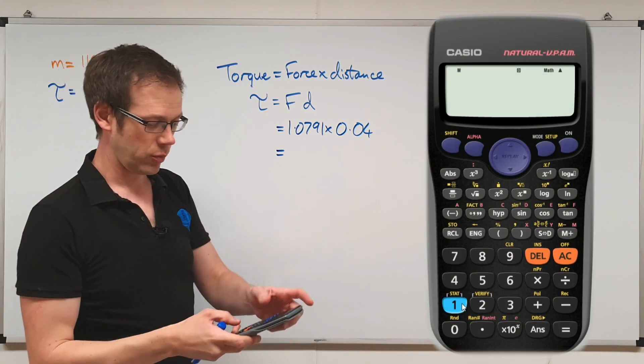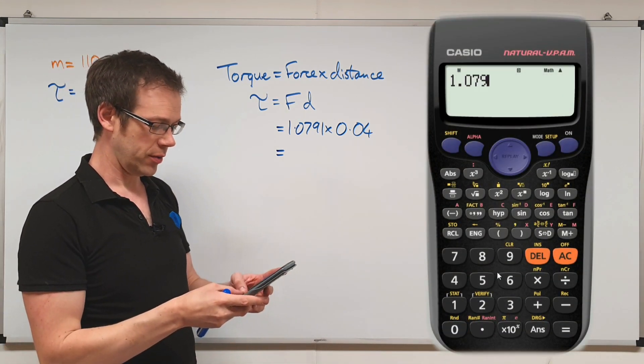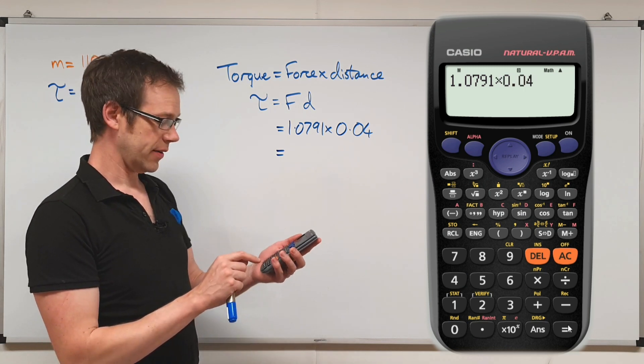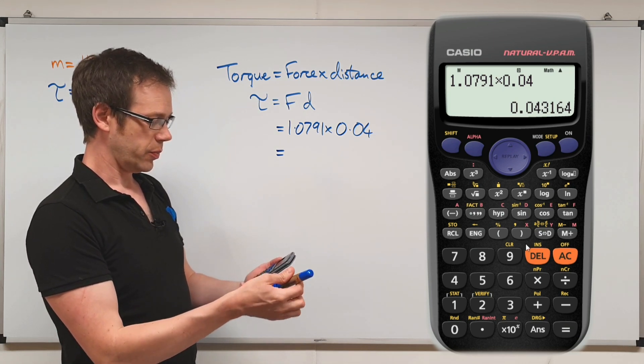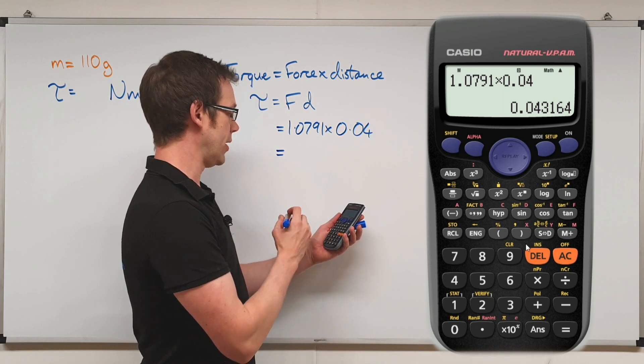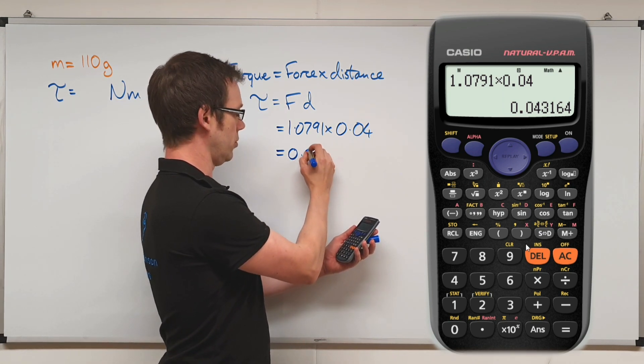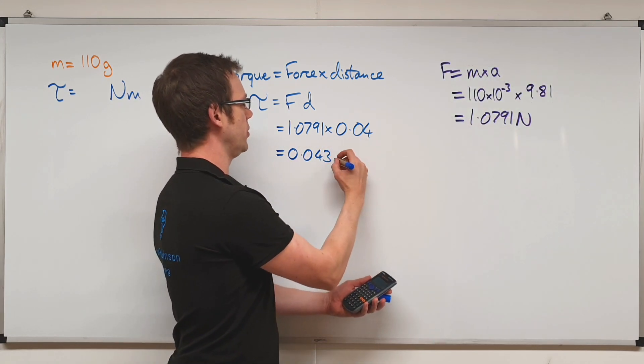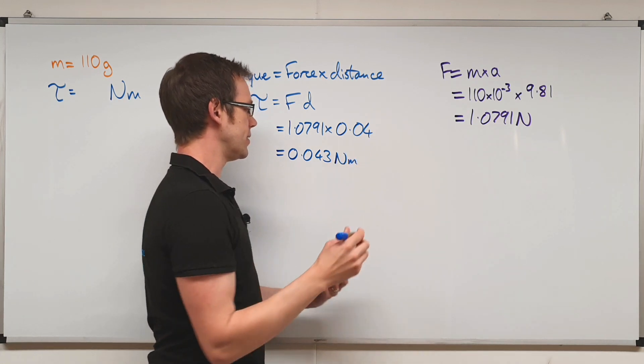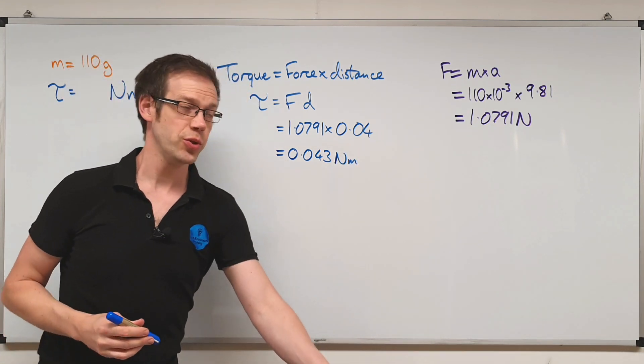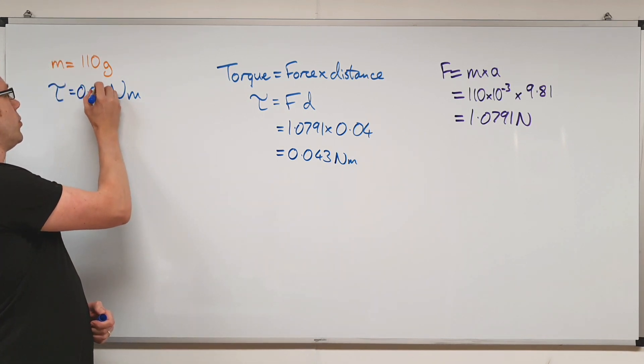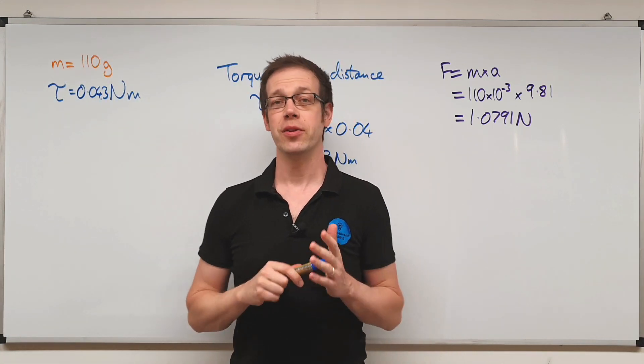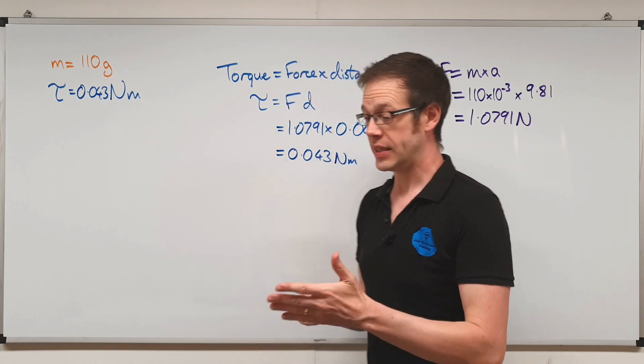Again, we'll just stick that into the calculator, 1.0791, and times that by 0.04. And that's going to give us an answer of 0.043—we'll round that off to three decimal places. So that's 0.043. And bear in mind here, we've got newtons and meters, so the unit that we've found there is newton meters. So in other words, this motor is producing a torque of 0.043 newton meters. So that's what we're looking at there. That's how we carry out the torque calculation for this particular motor.